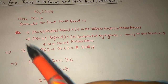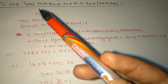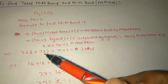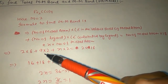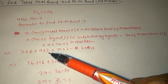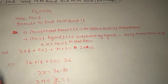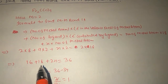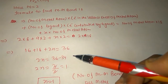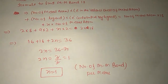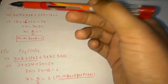For Fe₂(CO)₉: we have 2 metal atoms, 8 electrons in the valence shell of iron, 9 carbonyl ligands each contributing 2 electrons, and X metal-metal bonds per atom. So: 2×8 + 9×2 + 2X = 2×18, giving 16 + 18 + 2X = 36, therefore 2X = 2, and X = 1. The number of metal-metal bonds per atom is 1.